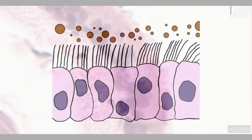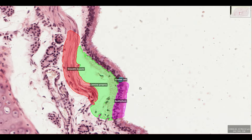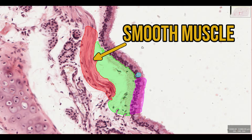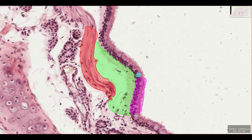The epithelium sits on a thin layer of connective tissue made up of collagen and elastin called the lamina propria. Underneath that there's a layer of smooth muscle which can control the bronchus diameter. This is great for relaxing to open the airways during exercise, but the muscle can also be affected by histamine which is released during allergic reactions causing bronchospasm.